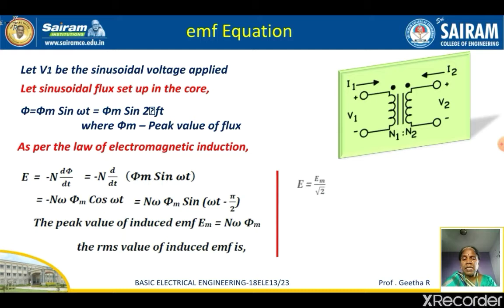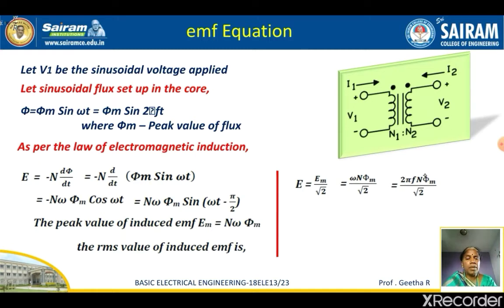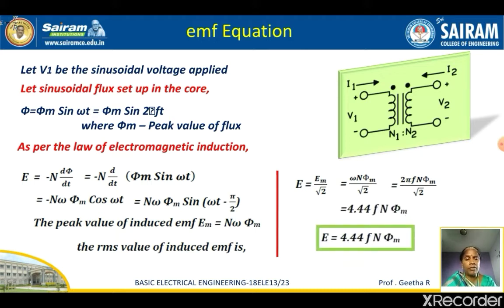The RMS value of the induced EMF is E = EM / √2. Substituting EM = NωφM, we get E = NωφM / √2. Since ω = 2πf, this becomes E = 2πf × N × φM / √2. Simplifying 2π / √2 gives 4.44, so E = 4.44 × f × N × φM.